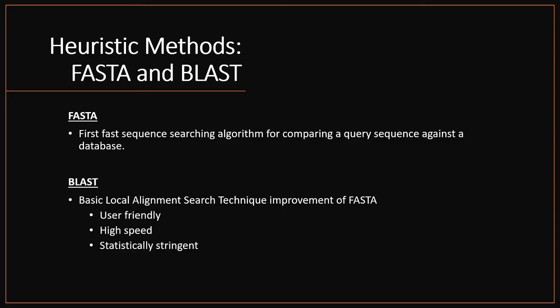There are two types of heuristic methods: one is FASTA and the other is BLAST. FASTA is the first sequence searching algorithm for comparing a query sequence against a database. BLAST, which stands for Basic Local Alignment Search Technique, is an improvement of the FASTA algorithm.